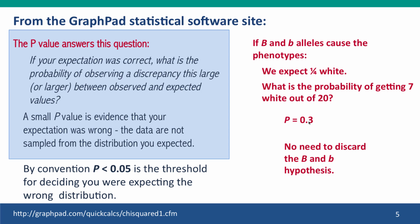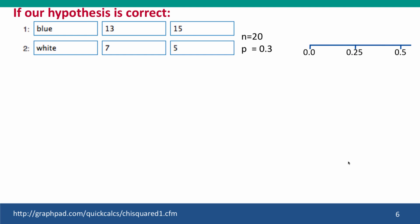In our case, p equals 0.3, that's way bigger than 0.05. So there's no need for us to discard the big B, little b hypothesis. Now we'll come back in a few minutes to the question of whether we actually should consider another hypothesis or whether we should just do a better experiment.